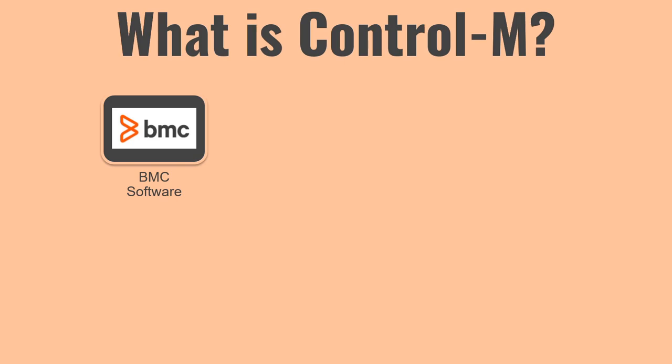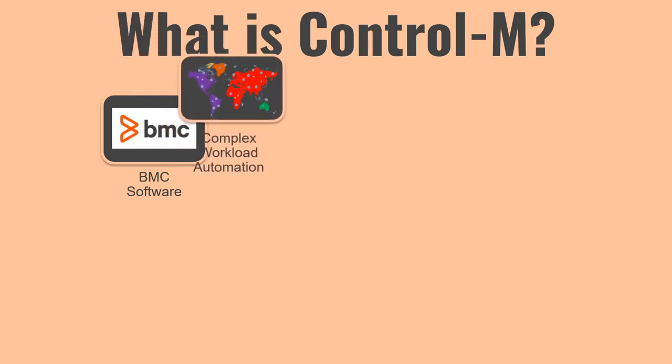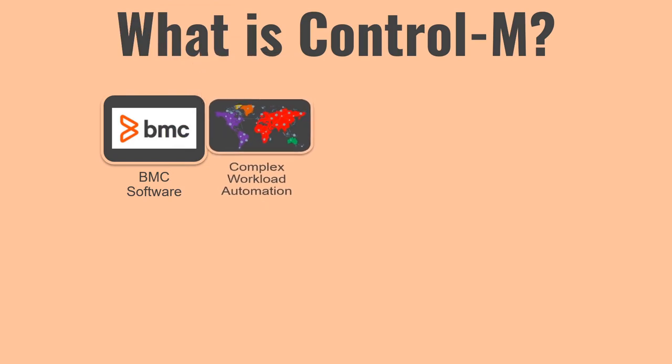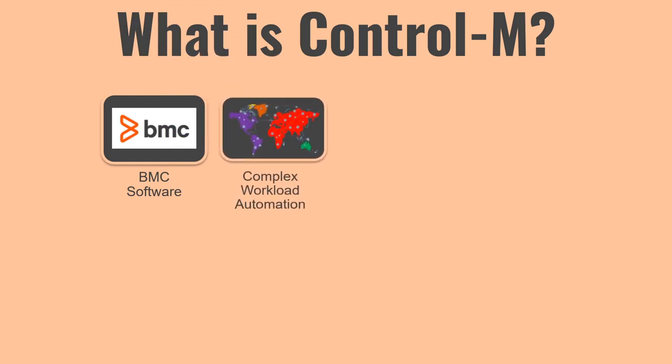Control M provides you a way to create or manage complex workload automation. With complex workload automation, what I mean is you can have your applications and scripts running on different types of servers — for example, scripts running on Windows, Linux operating systems, or on mainframes. If you want to schedule all of them and have a single monitoring window, you can do that using Control M.